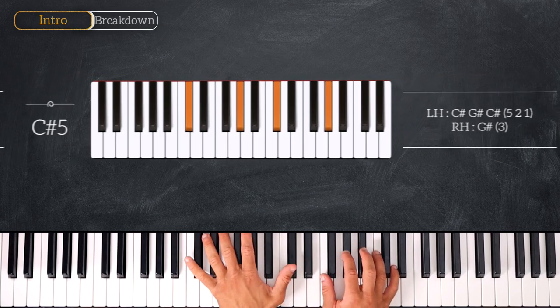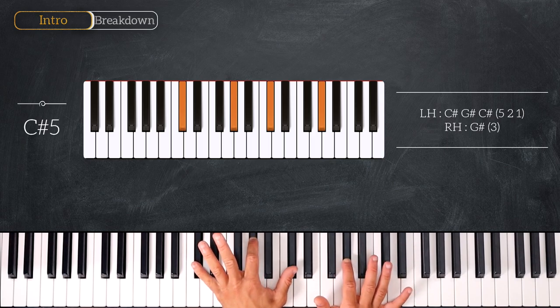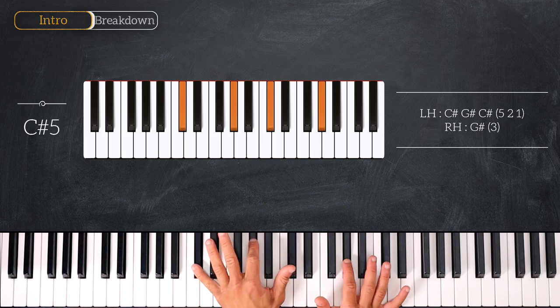Next we'll just play a C sharp with a fifth. So we have C sharp, G sharp, C sharp and G sharp. Just like that.